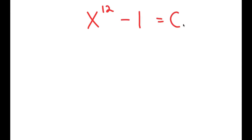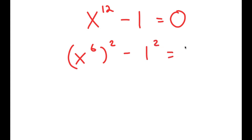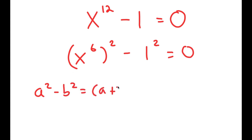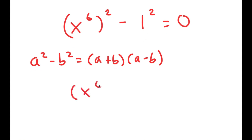In this video, I'm going to solve the equation x to the power of 12 minus 1 is equal to 0. To solve this, I'm going to first rewrite this as x to the power of 6, squared, minus 1 squared is equal to 0. The reason I'm doing this is so I can use the property a squared minus b squared equals a plus b times a minus b. So this turns into x to the power of 6 plus 1 times x to the power of 6 minus 1 is equal to 0.